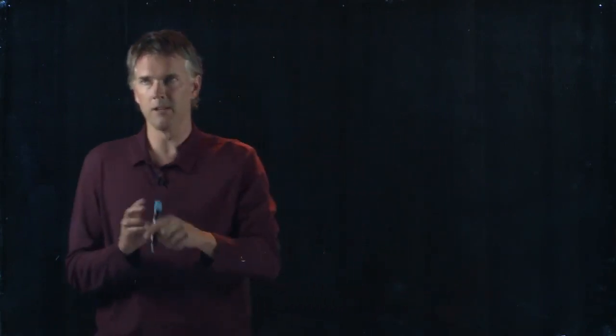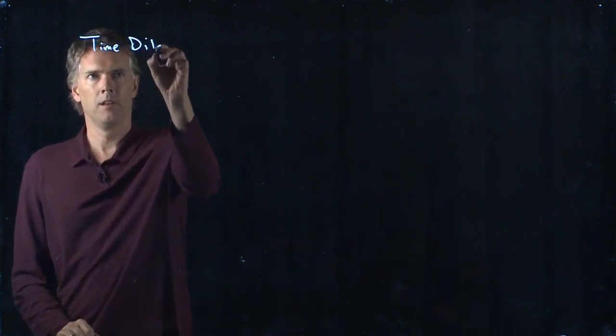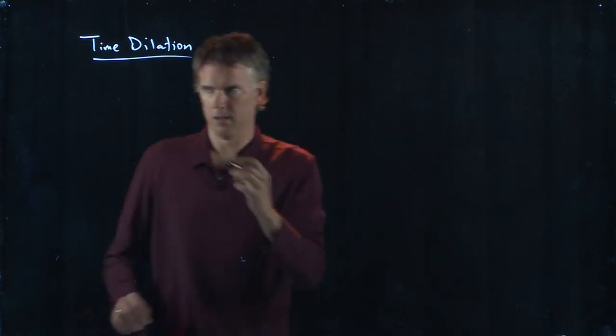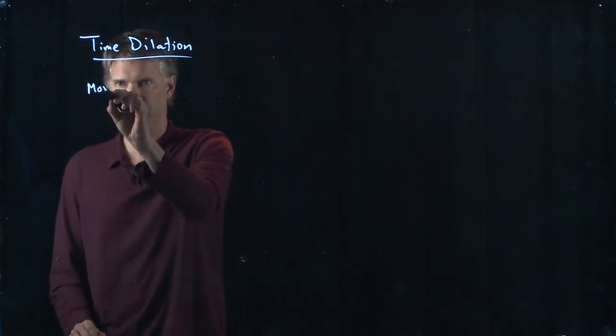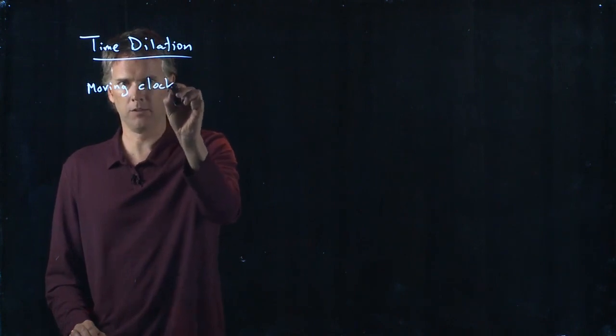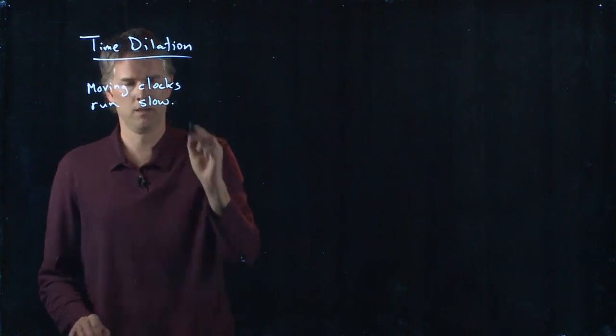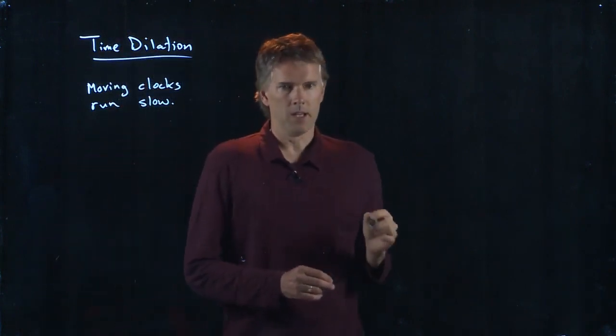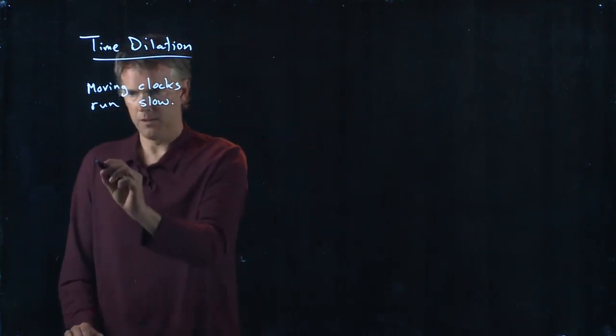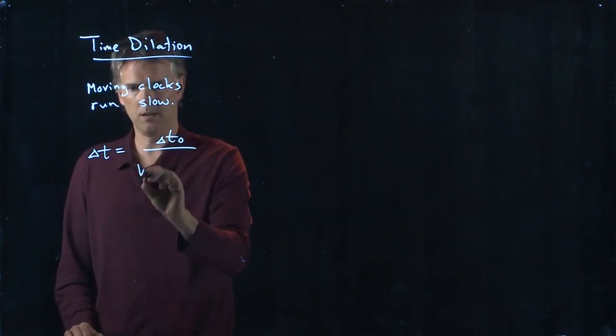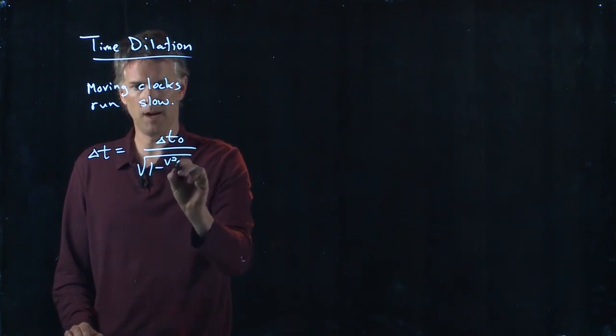Well, one thing we're worried about is time, and we talked about this in class. There is something called time dilation. In words, it's very simple: moving clocks run slow. In mathematical terms, it's written as Delta T equals Delta T naught over the square root of 1 minus v squared over c squared.